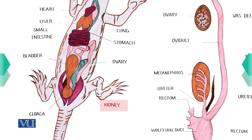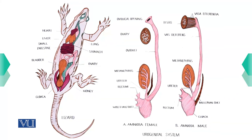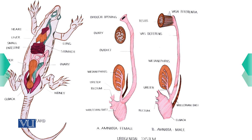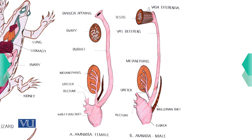The metanephric type of kidney is found in vertebrates. If we look at the structure of the kidneys and reproductive organs of lizards or reptiles, we can see that the reproductive organs are closely associated with the kidneys.